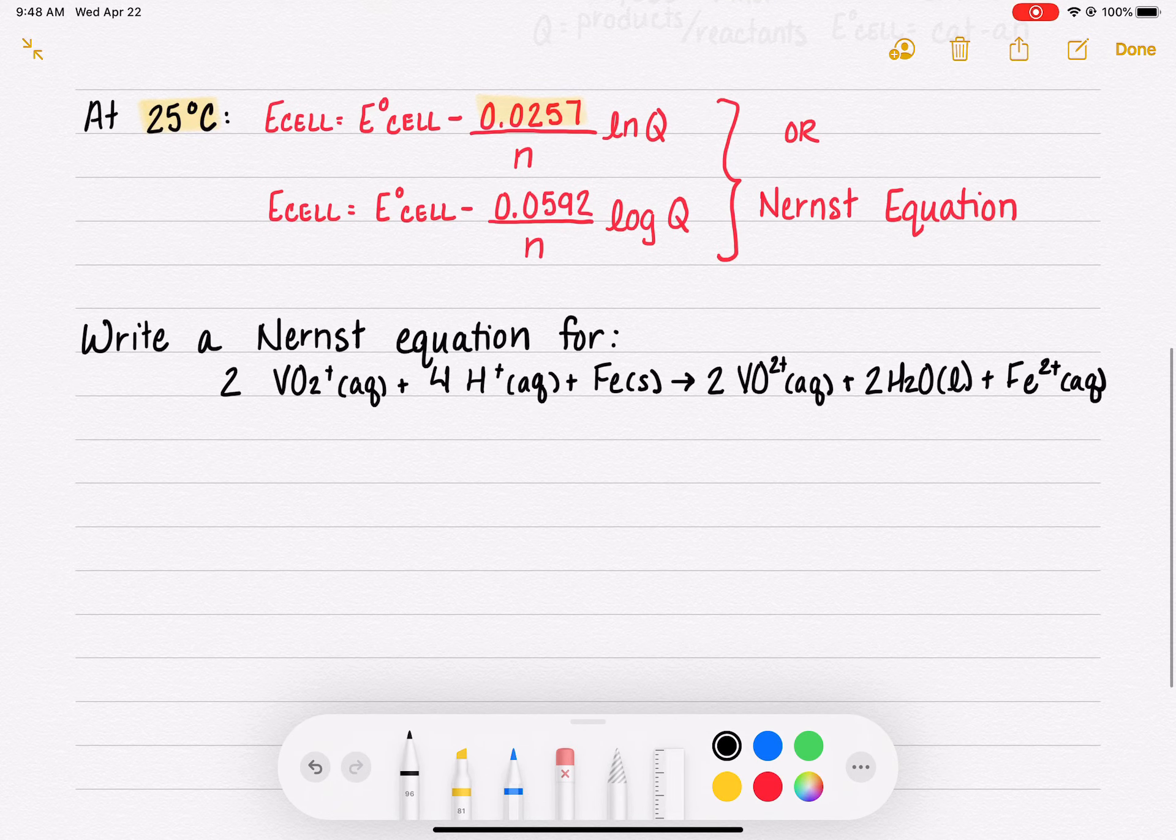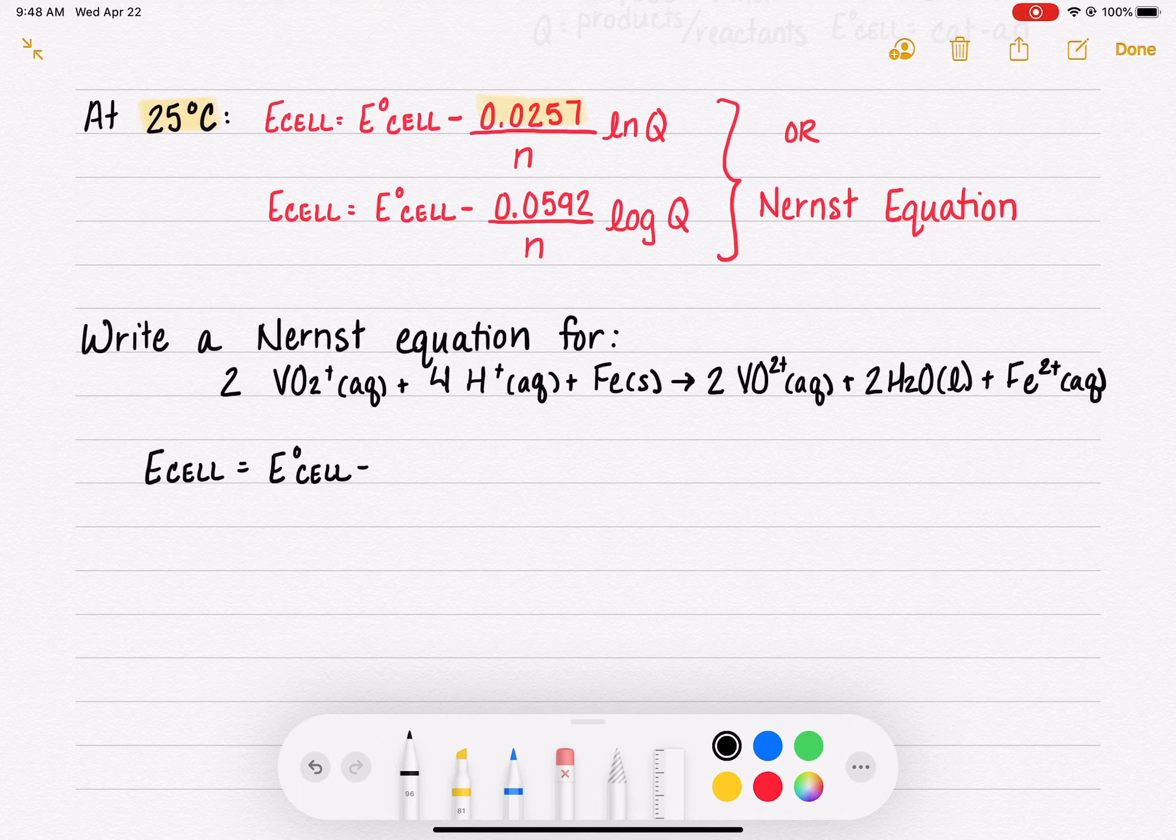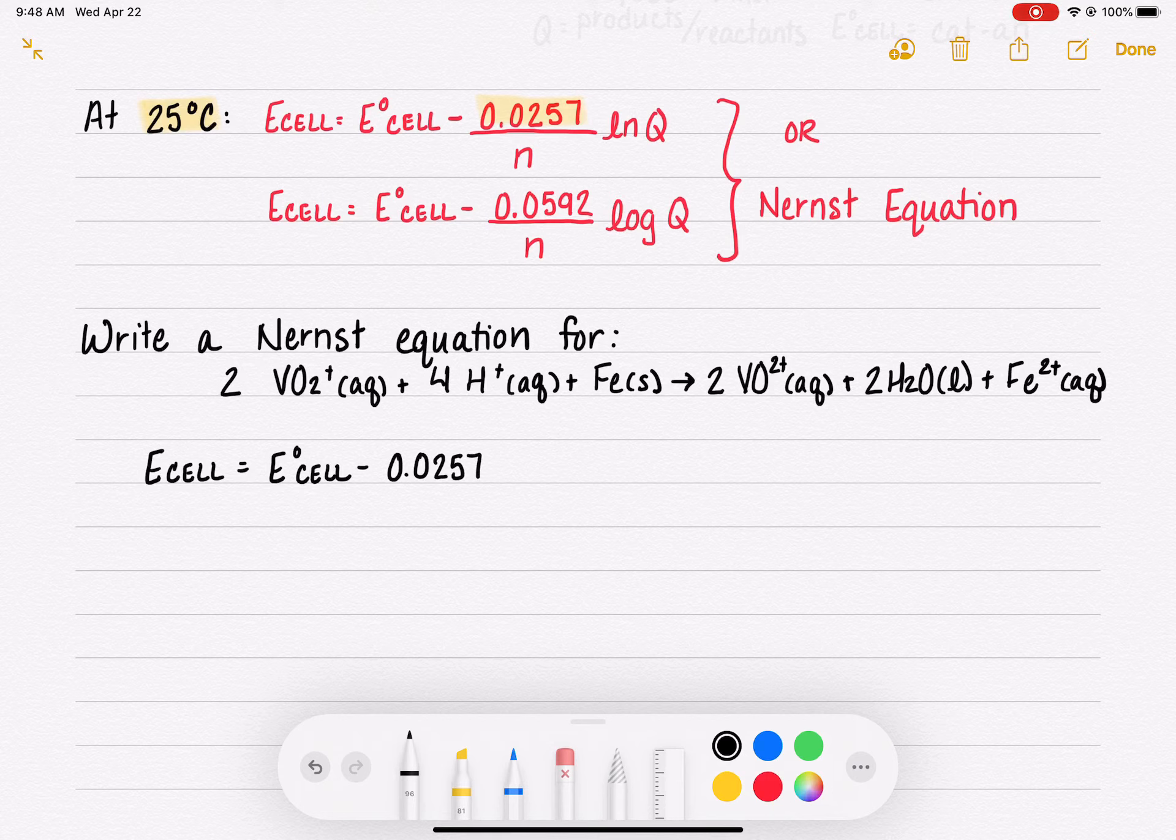We're just trying to set up the Nernst equation. I'm going to start by copying it. Ecell non-standard equals E°cell minus 0.0257 over n times the natural log of Q.